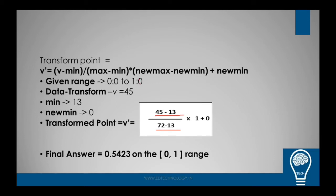New_max is 1 as you can see it here, so 1 minus 0 is 1 which is in here, and new_min which is 0 is here. So 45 minus 13 by 72 minus 13 times 1 plus 0, which is nothing but this particular term. When we mathematically calculate this, the resultant value is 0.5423 on the scale range of 0 to 1.